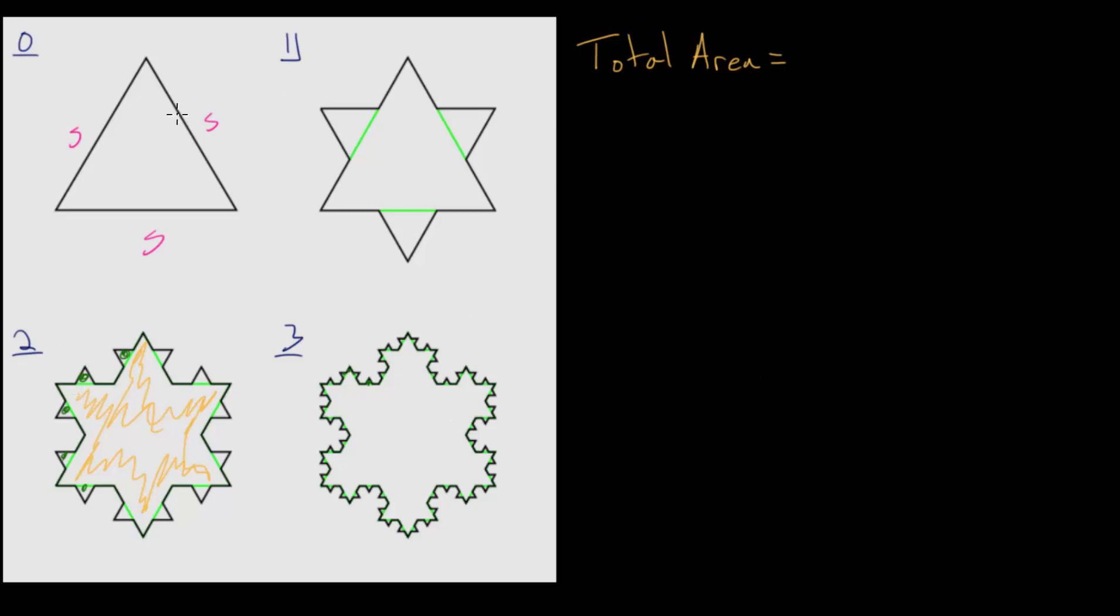So the general strategy is to find the area of the original one, then add the area of these three new ones, then add the area of the 12 small ones here, then the area of the 48 here, and so on.